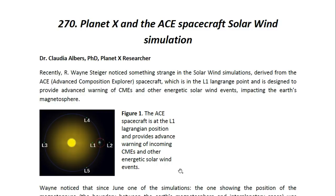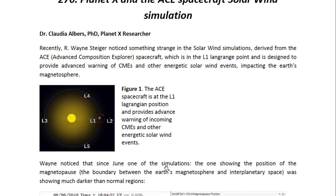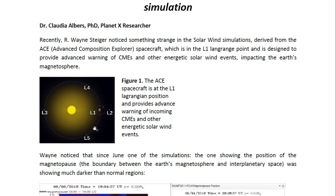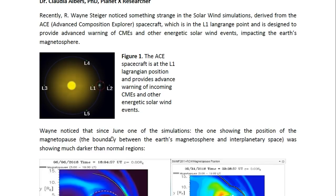Recently, R. Wayne Steiger noticed something strange in the solar wind simulations derived from the ACE, which stands for Advanced Composition Explorer spacecraft, which is in the L1 Lagrange point and is designed to provide advanced warning of CMEs and other energetic solar wind events impacting the Earth's magnetosphere. The L1 Lagrange point places the spacecraft directly in line between the Sun and the Earth, so whatever CME comes from the Sun will impact the spacecraft first, and thus it will be able to provide advanced warning to Earth as to it impacting the magnetosphere.